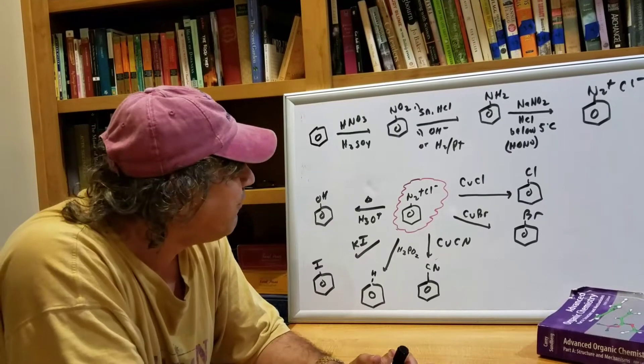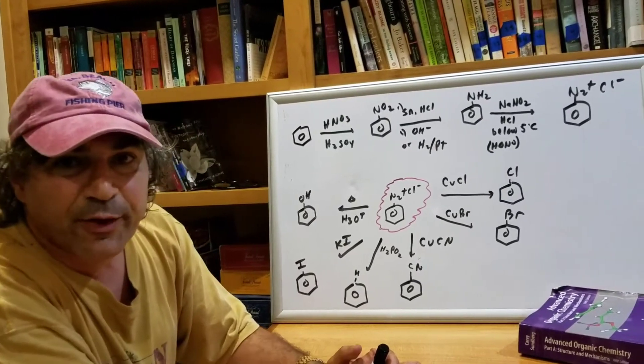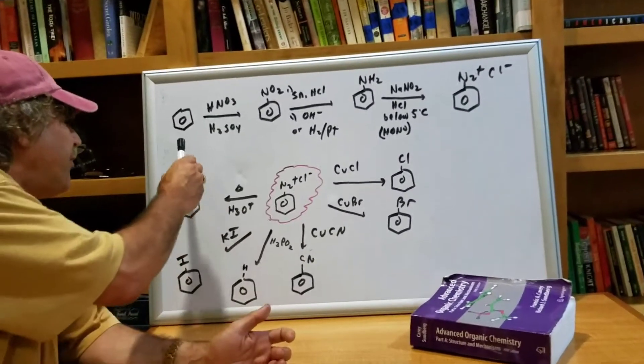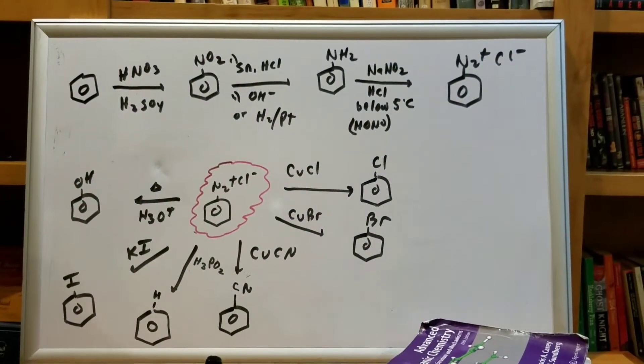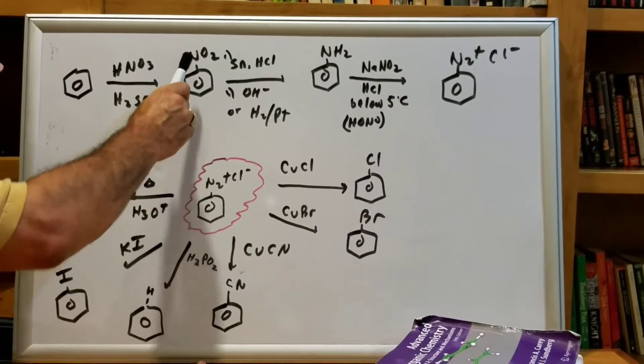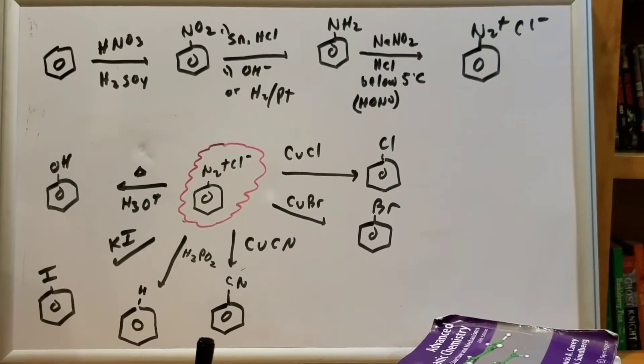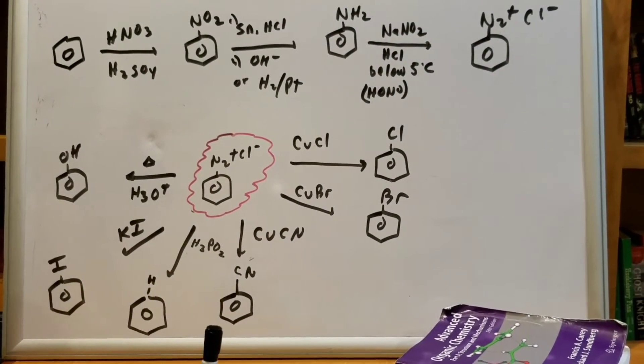It looks a little scary, I have to admit, but let's go through and see if we can sort it out. In the very first step, I took a benzene ring and I hit it with nitric acid and sulfuric acid. And that is how I put on an NO2 group or a nitro group. So I've nitrated the ring.